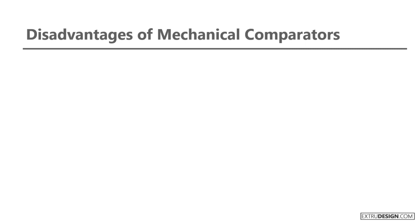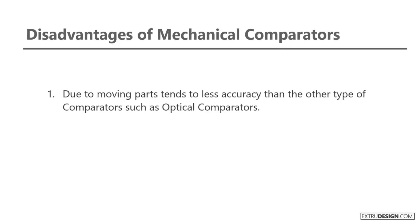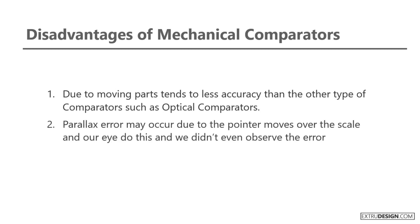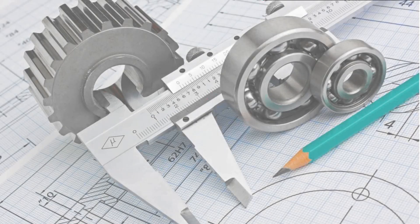Disadvantages of mechanical comparators: Due to moving parts, tends to less accuracy than other types of comparators such as optical comparators. Parallax error may occur due to the pointer moving over the scale and our eye doing this error, and we don't even observe the error. The range of this instrument is limited to particular applications. This is all about the mechanical comparator and its types.